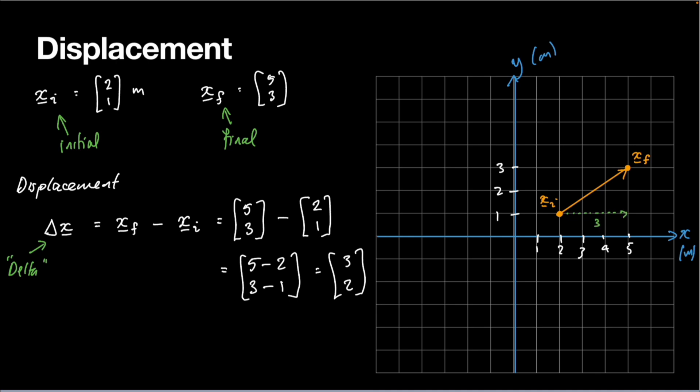That's a 3. And then it goes across by 3 and up by 2. So it's like what we call the components of this displacement vector.